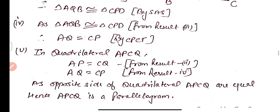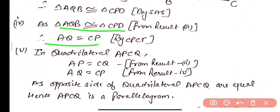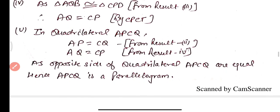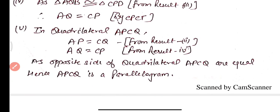Part 4: Since triangle AQB is congruent to triangle CPD, by CPCT we get AQ equals CP. Part 5: In quadrilateral APCQ, we have proved AP equals CQ from result 2 and AQ equals CP from result 4. Since opposite sides of quadrilateral APCQ are equal, APCQ is a parallelogram.